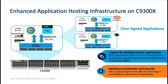Applications like ThousandEyes and Cisco DNA Spaces can be hosted on the same 9300X box, redefining the IT experience by providing end-to-end application visibility and IoT endpoint visibility. On top of this, Quick Assist Technology — QAT — is a special engine on the x86 CPU that helps accelerate the performance of applications hosted on the Catalyst 9300X.